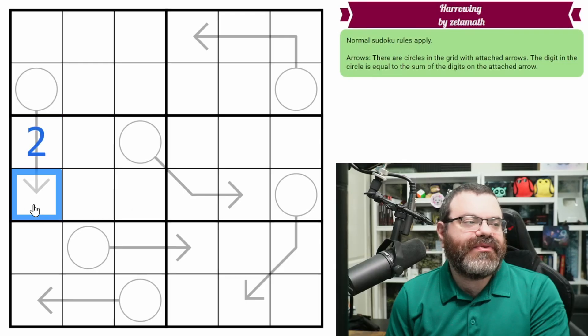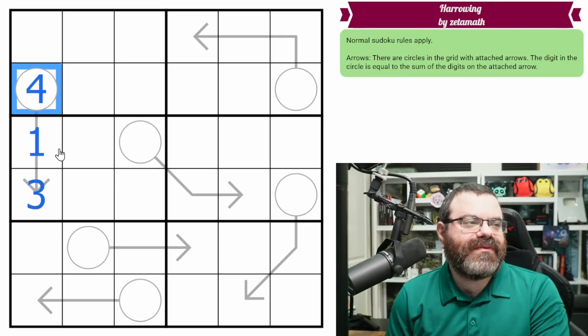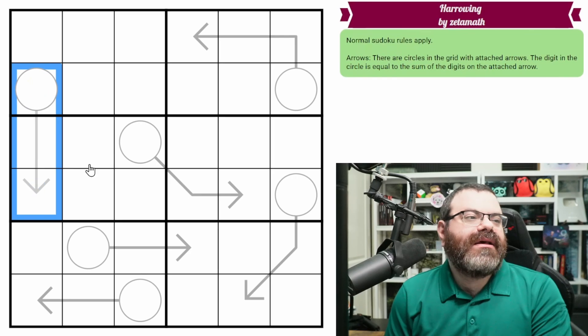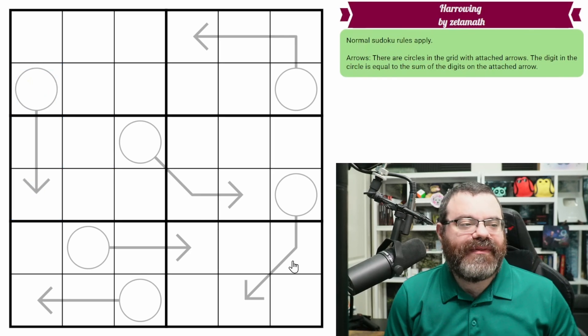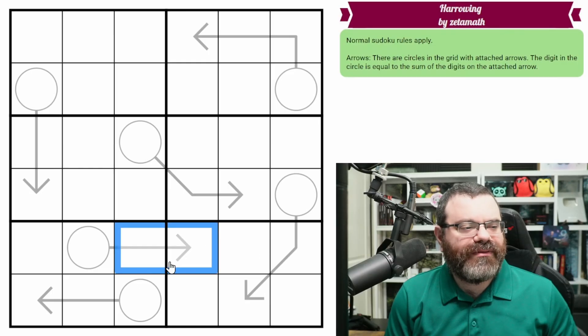So if this was, for example, 2, 3, 2 plus 3 is 5, this would be a 5. If it was 1, 3 instead, this would be a 4. And that's it. I guess I should point out that arrows don't add any additional non-repeat rule, although I don't know if that actually matters.